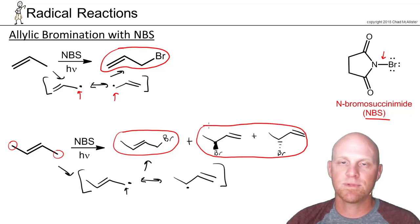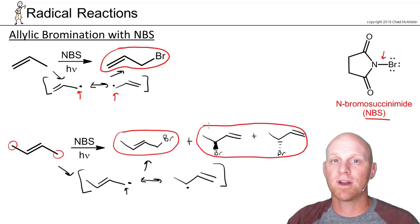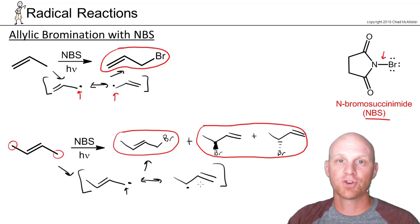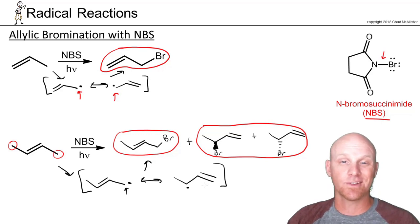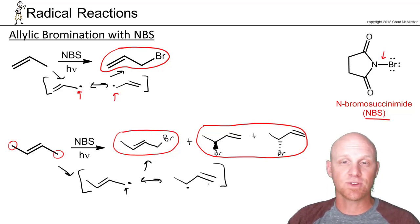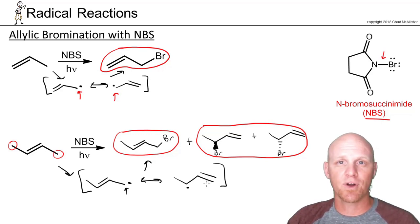So when you're using NBS and doing allylic bromination, I highly recommend you draw out both resonance structures for your radical to see if there are any initially unexpected products.